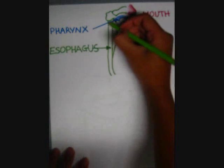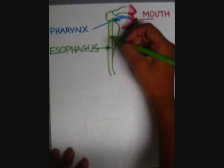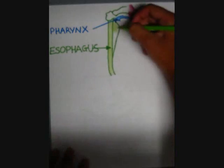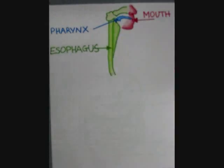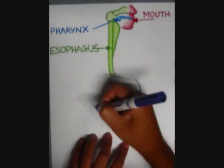Next is the esophagus. In the esophagus food is passed through the process of peristalsis. Peristaltic action moves swallowed food down to the stomach.